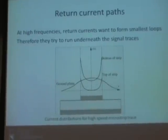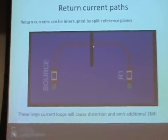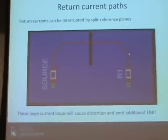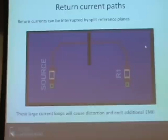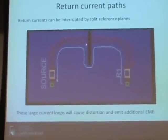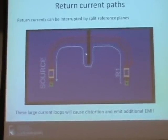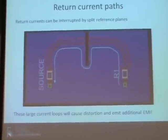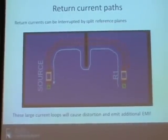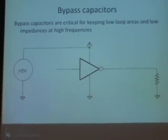What if we put a notch in our ground plane underneath the trace? The return current still wants to flow under the signal trace, but it can't — it has to detour around the notch. That widens the loop area, creates higher impedance, and worst of all, the resulting loop will both emit and receive additional electromagnetic fields, causing EMI issues.